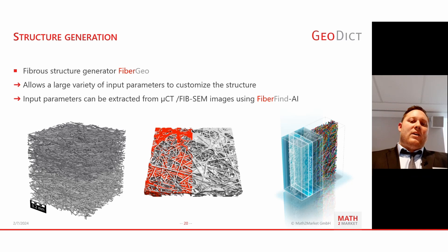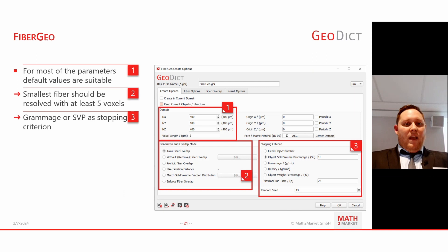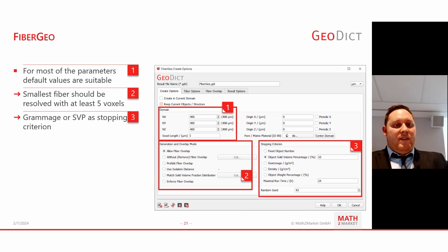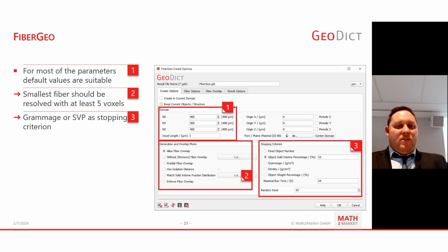My colleague Andreas Grieser has a workflow showing how to use FiberFind AI results to generate a digital twin with exactly the same stochastic parameters as the original micro-CT scan, enabling optimization routines. In FiberGeo, most parameters will be default. You can specify the numerical domain and voxel size — the voxel length should resolve the fiber several times. Our rule of thumb is roughly five voxels for the smallest fiber. We also specify an overlapping method and a stopping criterion: either grammage or solid volume fraction, which is most commonly used.